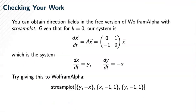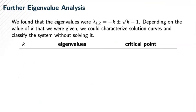We chose a particular value of k for this analysis. We could have chosen other values of k and gotten different results. If k were greater than 1, the eigenvalues λ would have been real, distinct, and negative, meaning the critical point at the origin would have been stable.